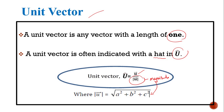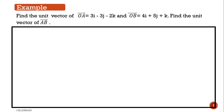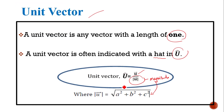Let's look at an example. Find the unit vector of OA equal to 3i minus 3j minus 2k, and vector OB equal to 4i plus 5j plus k. Find the unit vector of AB. In order to solve the question, we have to apply this formula: unit vector for AB.